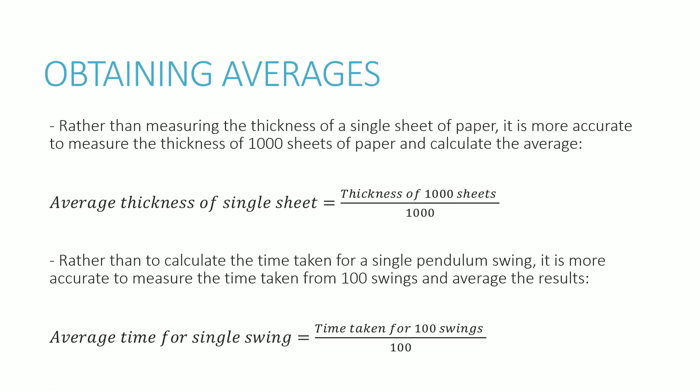Now, one important concept of measuring things in general is to obtain averages. So for example, if you wanted to measure the thickness of, say, a single sheet of paper, instead of using, let's say, a micrometer on a single sheet of paper, it is far more accurate, in fact, to get 100 sheets of paper, or even 1000 sheets of paper, and then you measure the thickness of 1000 sheets, and then you divide it by 1000 to get a single sheet of paper. This is what we call obtaining averages, because that will account for slight variations, perhaps, between the thicknesses of different sheets of paper, and it's overall more accurate. So again, if you were to put that into a formula, the average thickness of a single sheet would therefore be the thickness of 1000 sheets of paper divided by 1000.